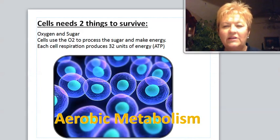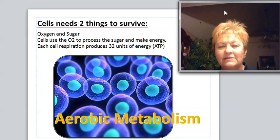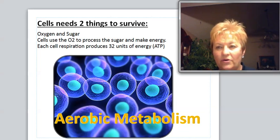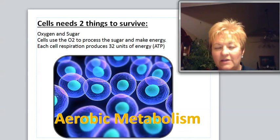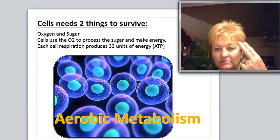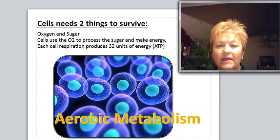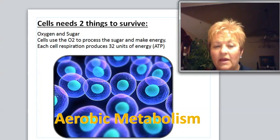The first thing you need to understand is that our cells have a process in which they burn sugar and make energy out of it. So our cells have to have two things: oxygen and sugar. And when they don't have those things, they don't work very well. So let's talk about the oxygen aspect of that.